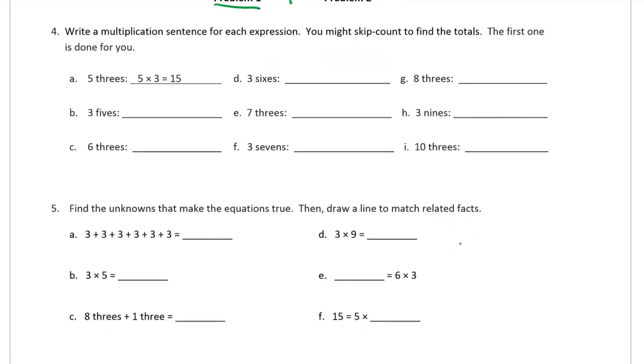Write a multiplication sentence for each expression. These are all expressions. This is an equation because it has an equal sign. You might skip count to find the totals. The first one is done for you. Three fives is three times five equals 15. That's just the commutative property from A. Six threes is six times three equals 18. That's the array we just did above. Three sixes, we did that one too. That's three times six equals 18.